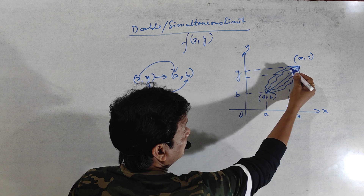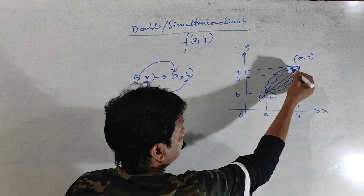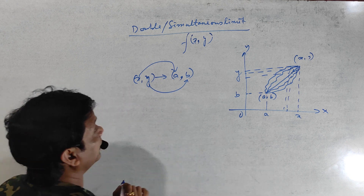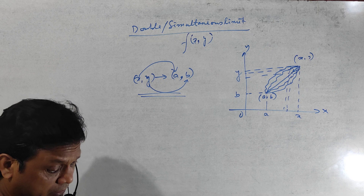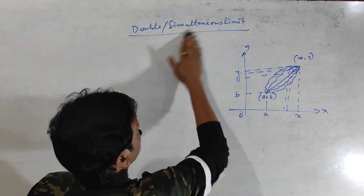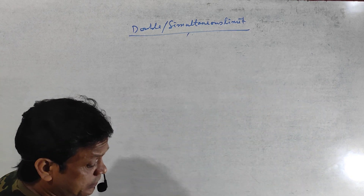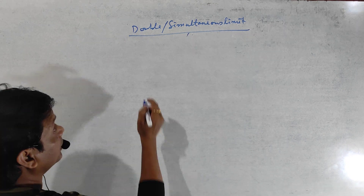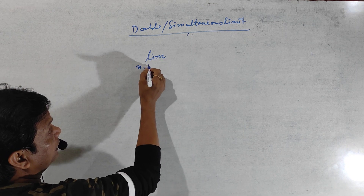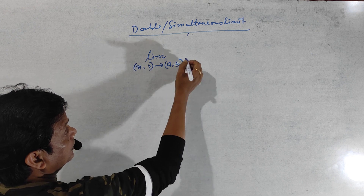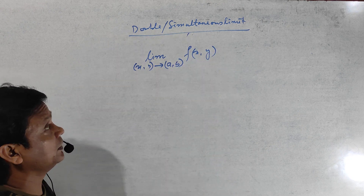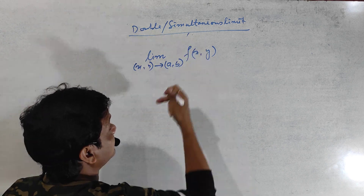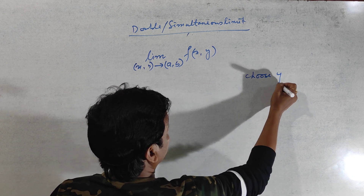You can move in various ways — when x approaches a, at the same time y approaches b. My course covers how to solve this type of limit. First of all, I will tell you how to write the double limit or simultaneous limit. It is written as: limit as (x, y) approaches (a, b) of f(x, y). You should choose y equal to φ(x), such that as x tends to a, y approaches b.